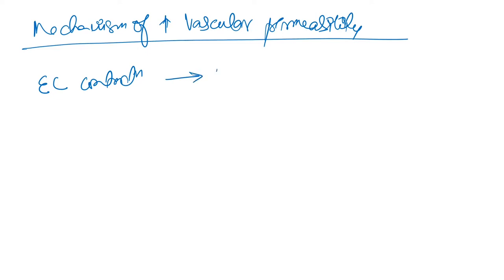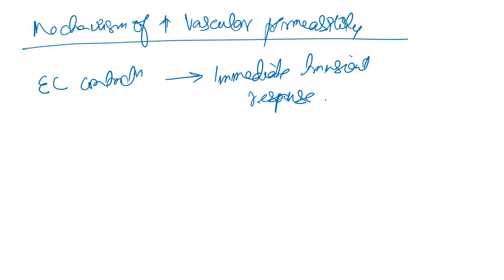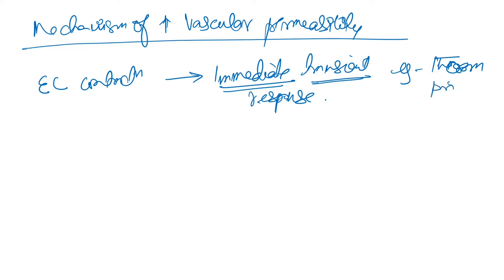Now the mechanism of increased vascular permeability: endothelial cell contraction is an immediate transient response — it lasts only for a little time. Example: thorn prick.